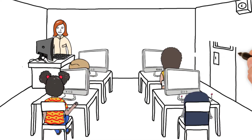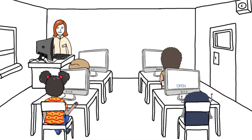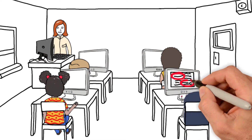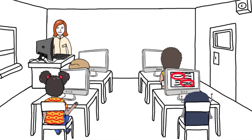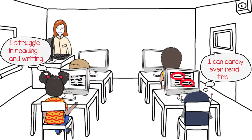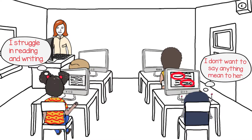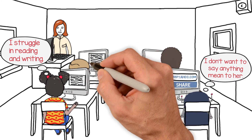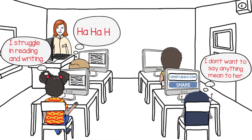One day, Digi opened a paper that a classmate had sent him. Immediately, he noticed that there were a lot of spelling mistakes — he could barely even read the paper. The paper had been written by a classmate who struggled in reading and writing. Digi didn't want to say anything mean to the girl, and he didn't want to get in trouble. He did, however, want his best friend to see this paper. He hit the share button and typed in his friend's email address.